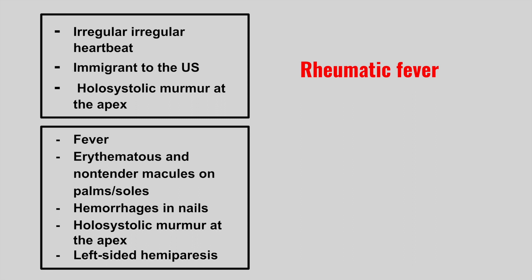The next one is someone with fever, erythematous and non-tender macules on the palms and soles, hemorrhages in the nails, a holosystolic murmur at the apex, and left-sided hemiparesis. This is infective endocarditis. The FROM JANE mnemonic stands for fever, Roth spots, Osler nodules, murmur, Janeway lesions, anemia, nail bed hemorrhages, and septic emboli causing the left-sided hemiparesis.